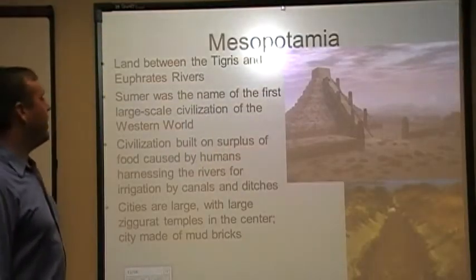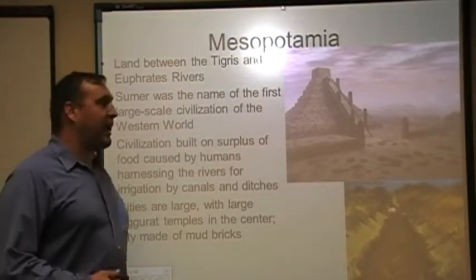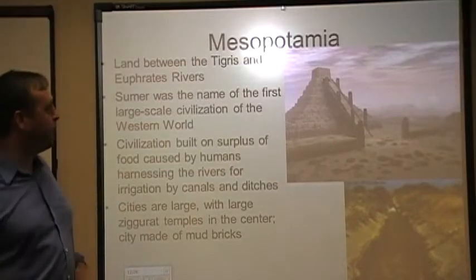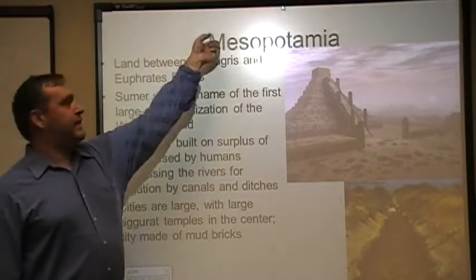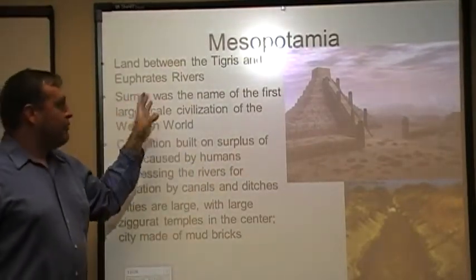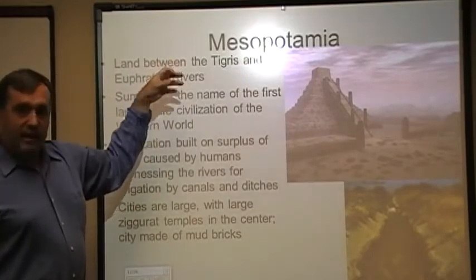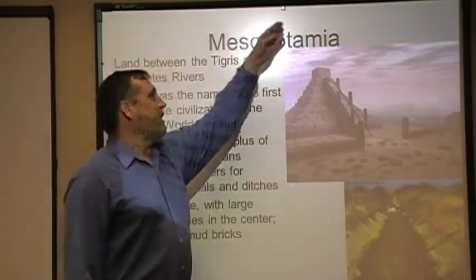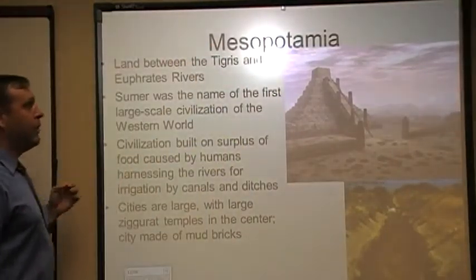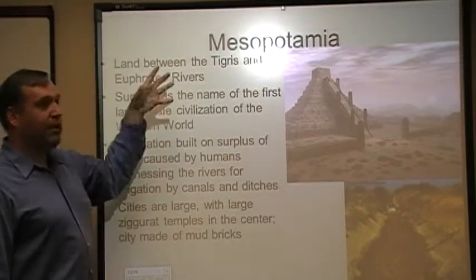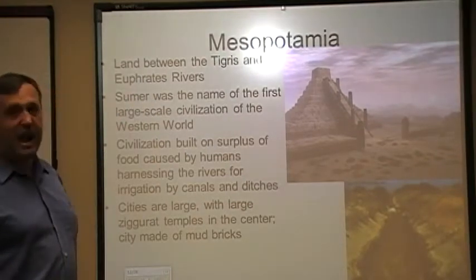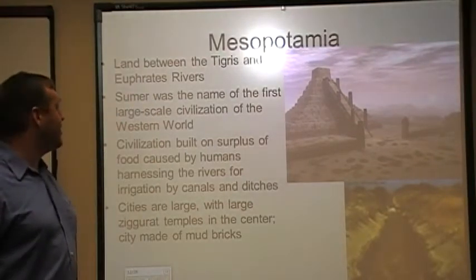So the first one here is going to be Mesopotamia. As I mentioned, it's the land between the Tigris and Euphrates River. This is the Greek term — Miso meaning middle, and Potamia meaning water — the land between the waters. This is what the Greek historians called it, and the name has kind of stuck.